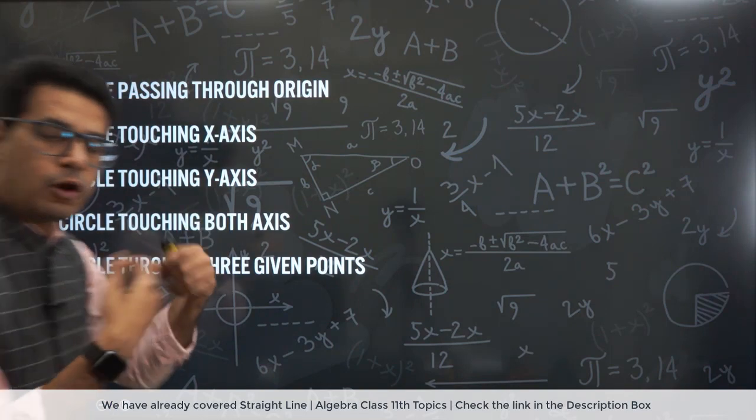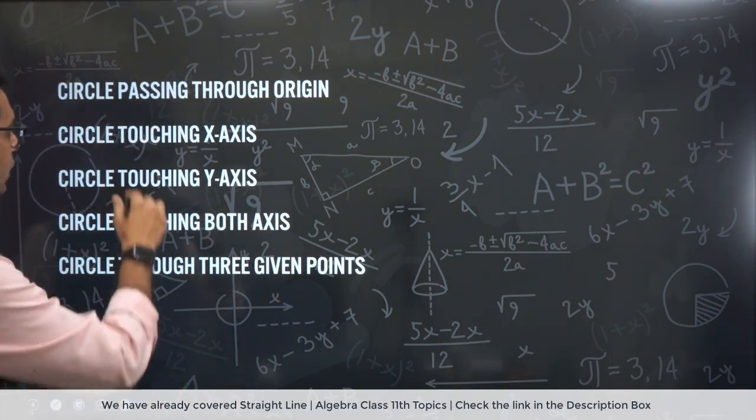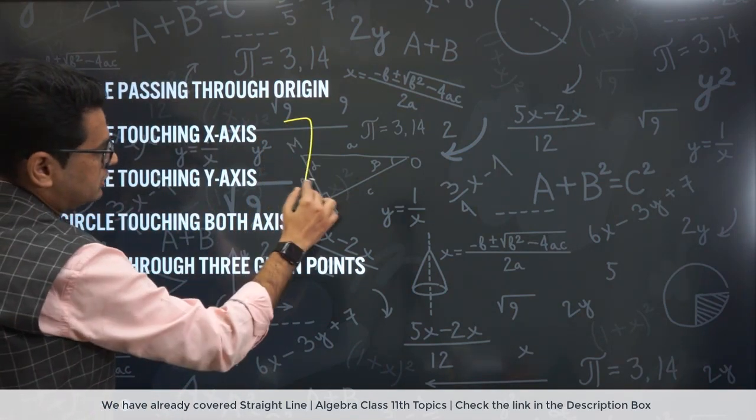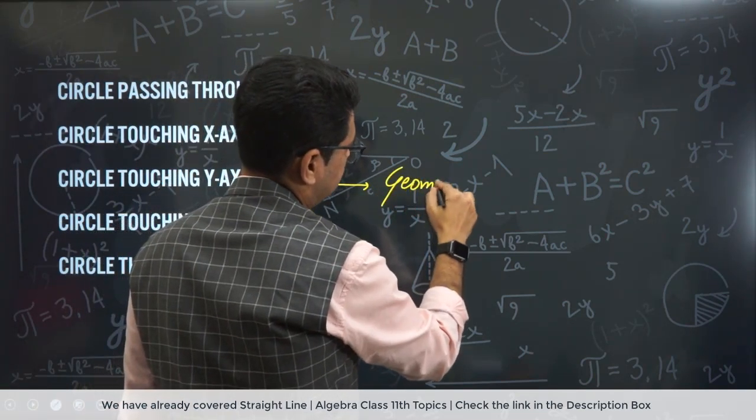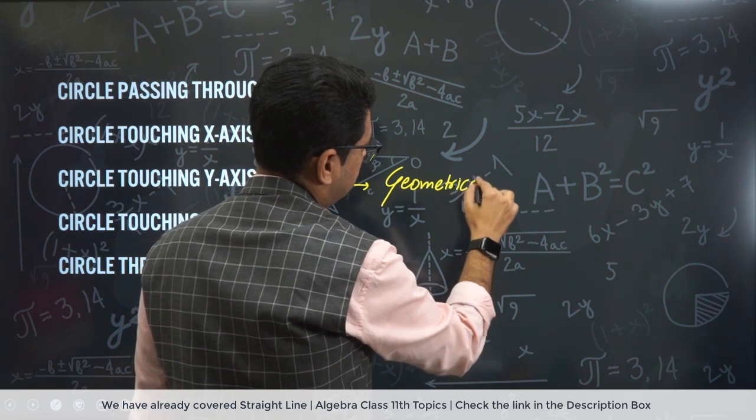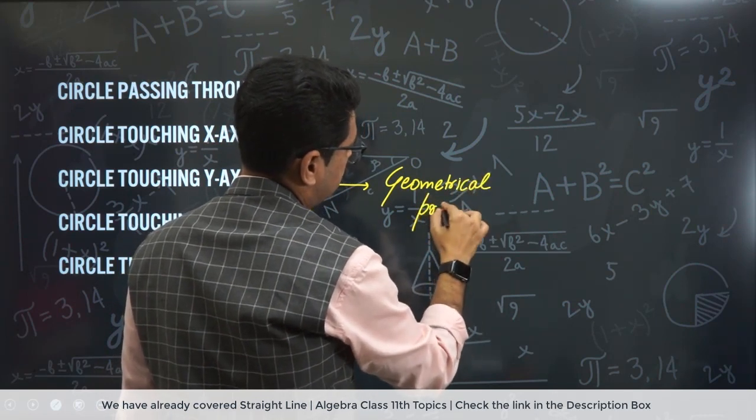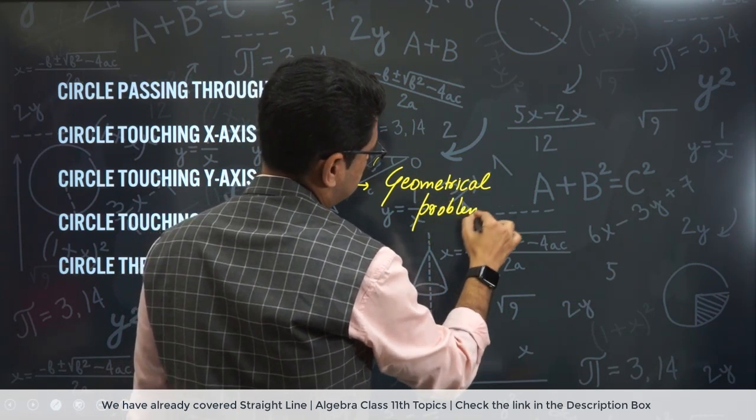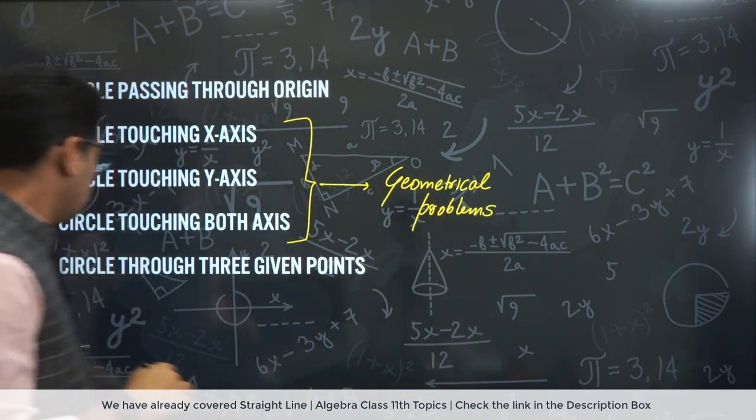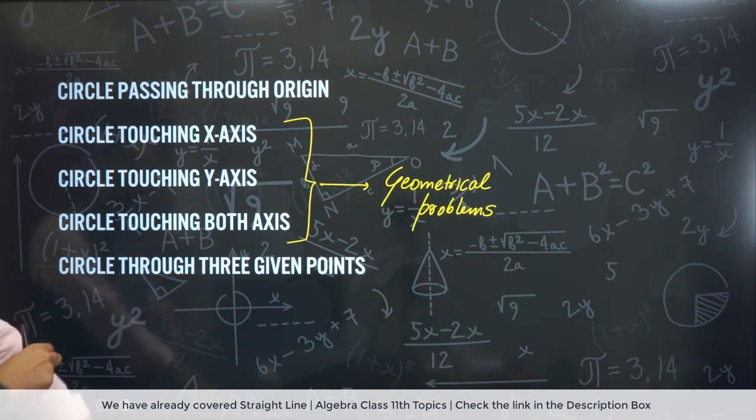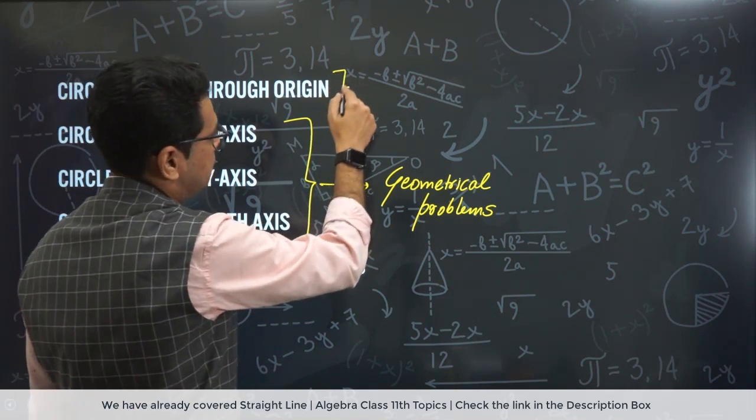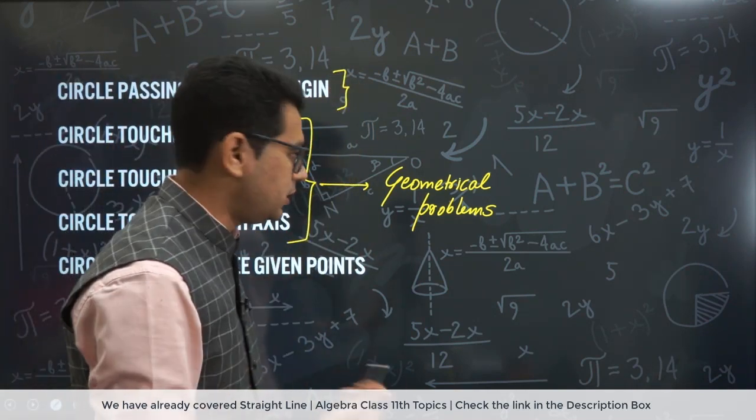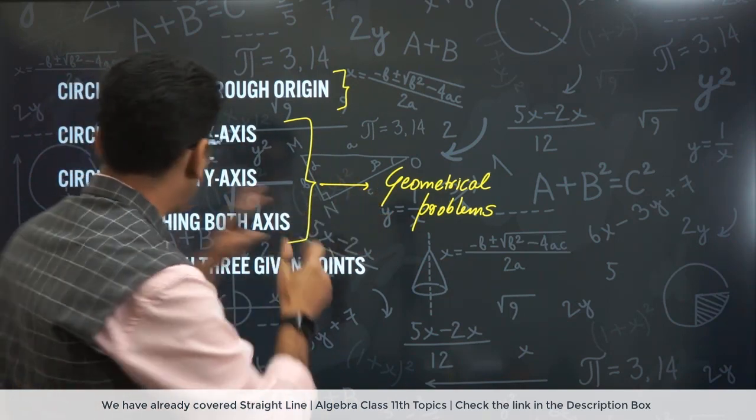Circle passing through. So different forms of circle, specially. Circle touching x-axis. Circle touching y-axis. Circle touching both axes. On this, geometrical questions are made a lot. Geometrical problems. And this is something which you should focus on. Geometrical problems. Okay? Circle through three given points. This is okay. Not that important. Yes. Circle passing through a region.